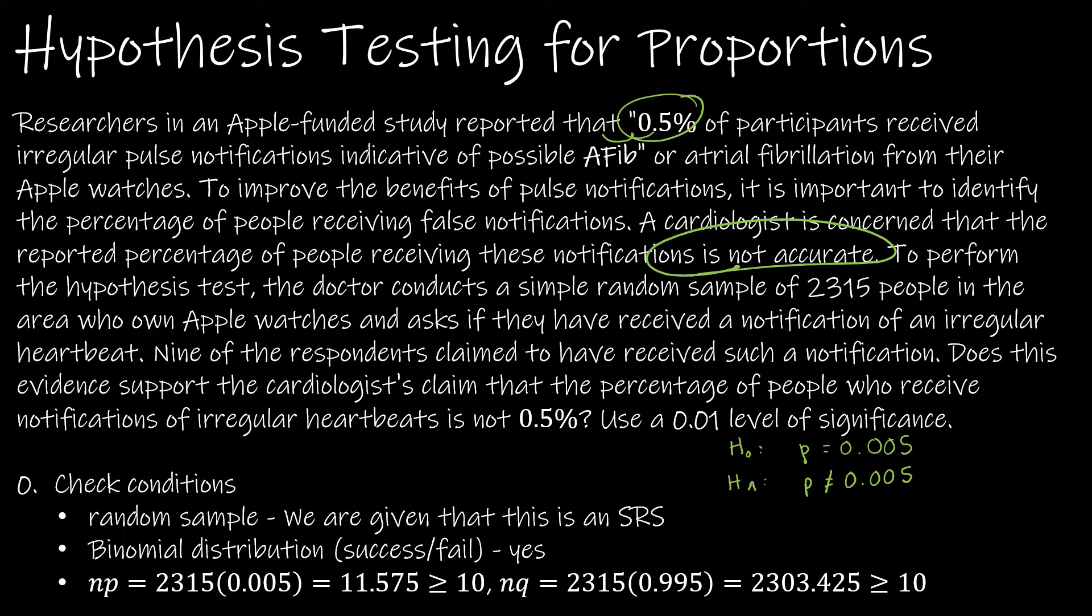To perform the hypothesis test, the doctor conducts a simple random sample of n equals 2,315 people who own Apple watches and asks if they have received a notification of an irregular heartbeat. Nine of the respondents, X is 9, claimed to have received such a notification.